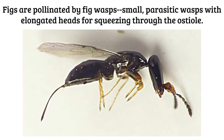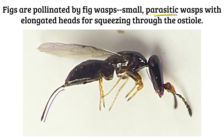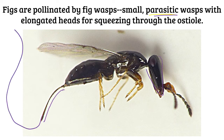These figs are pollinated by fig wasps, which are small wasps with elongated heads for squeezing through the ostiole. You can sometimes look at an organism and figure out what it does by its shape. Fig wasps that are pollinators have a relatively short ovipositor, whereas other types of fig wasps parasitize figs strictly without pollinating — they do that from the outside with a very long ovipositor, jabbing through the outside of the fig and parasitizing it without ever entering.